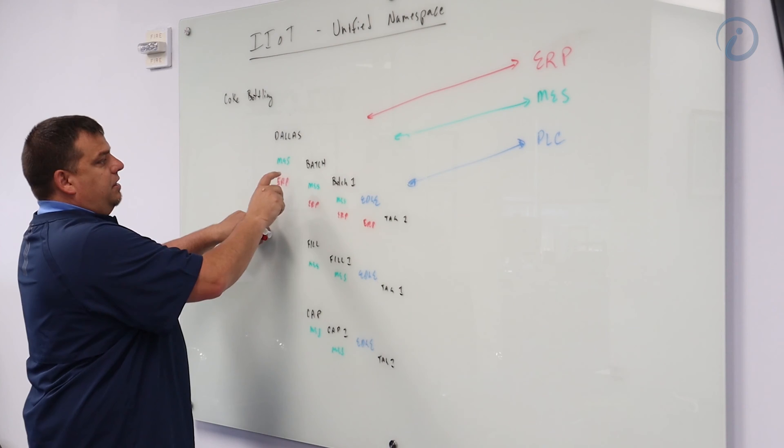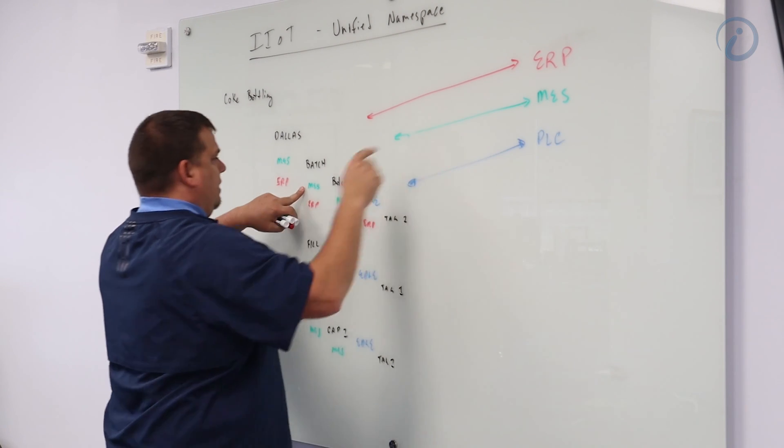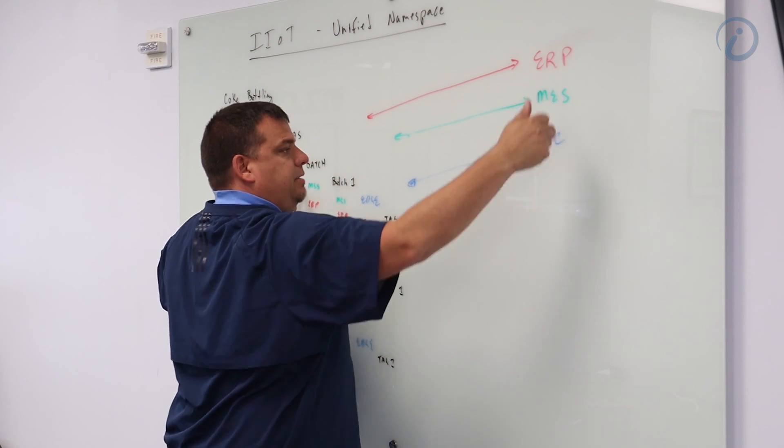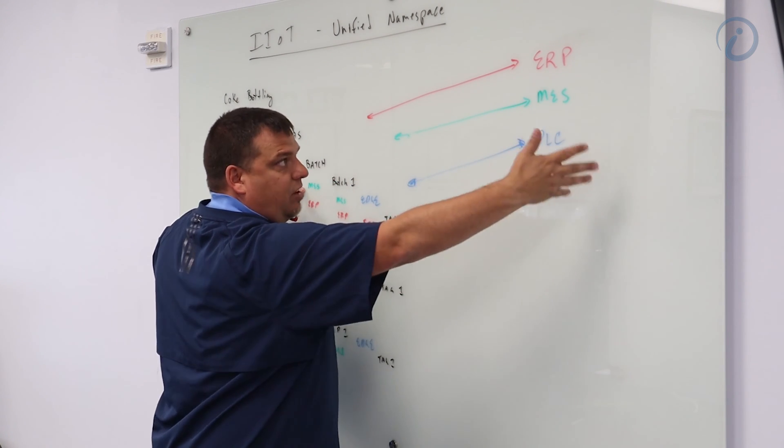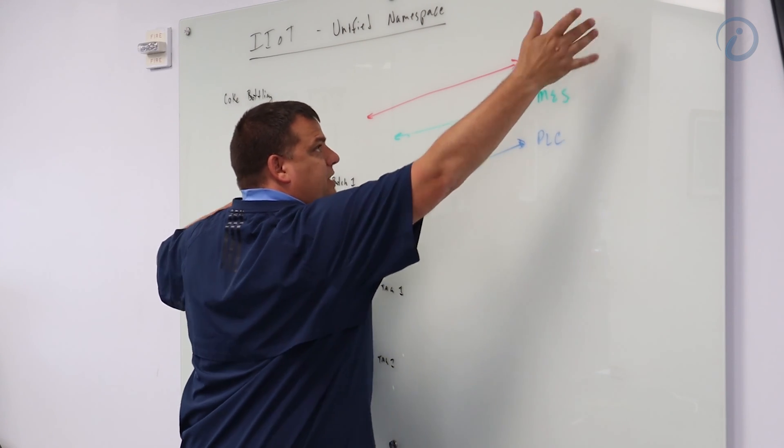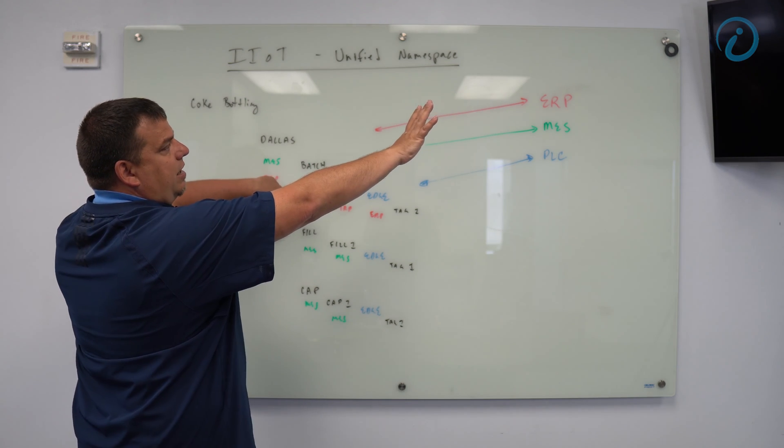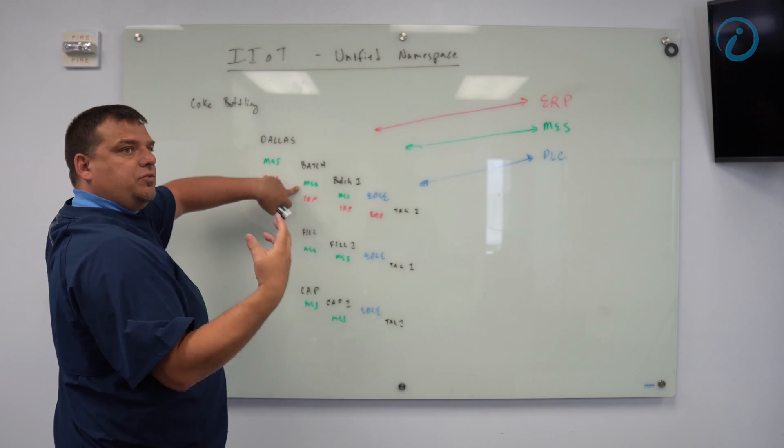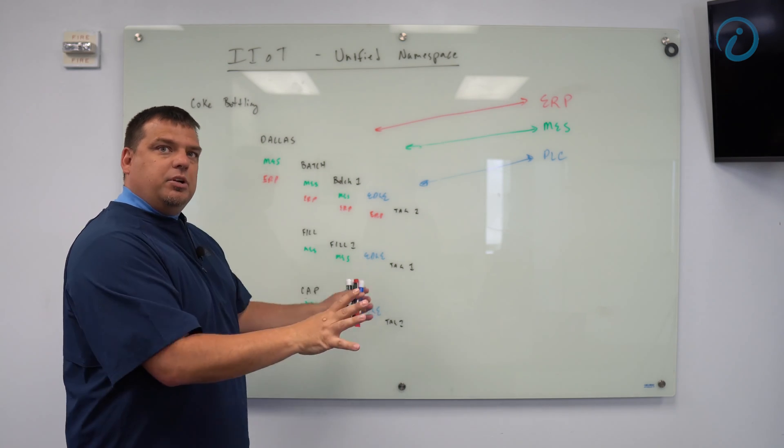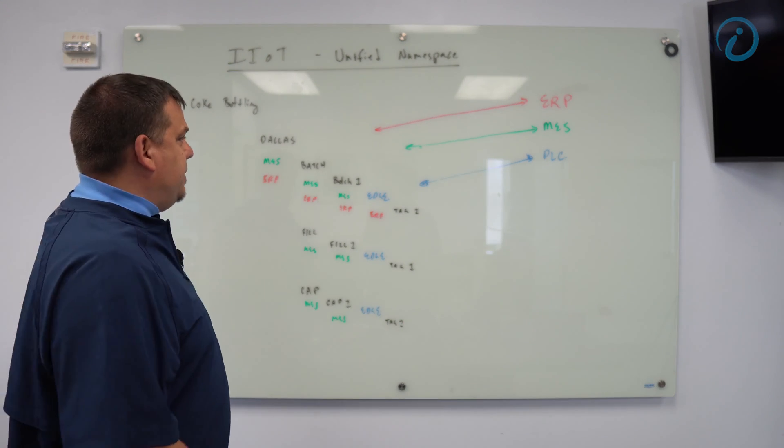Instead of having this MES data living inside the MES system, it lives over here. The MES system still has its own namespace and the PLC has all of its own tags. The MES system has all of its own tags. The ERP system has all of its own tags. Instead of having it only live over there and we create static connections for all the information we care about, we don't do that. What we do is take all of our data and put it in one location. This is an example of a unified namespace.